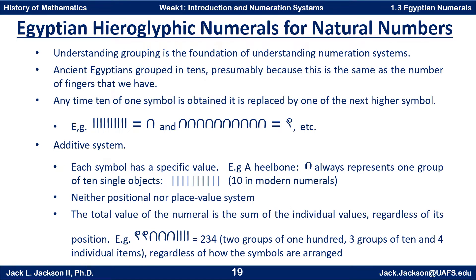Anytime ten of one symbol are present, the group is replaced by one of the next larger symbol. Notice that this is an additive system, so that the values of the respective symbols are simply added together to get the value of the numeral. This is not a place value system like our system.